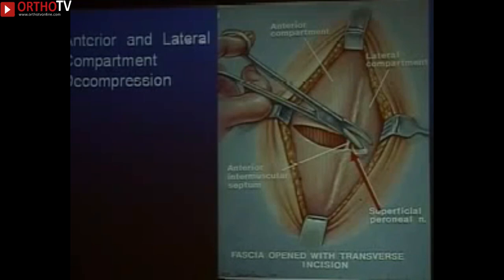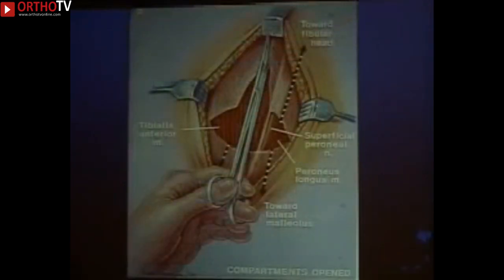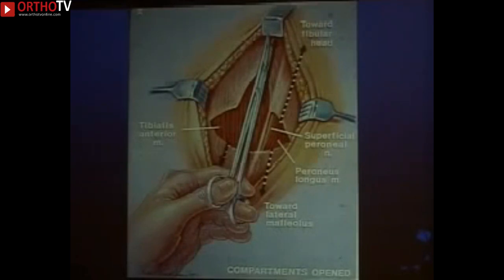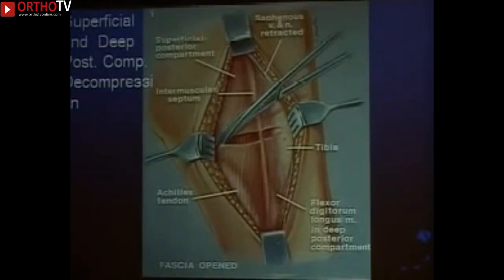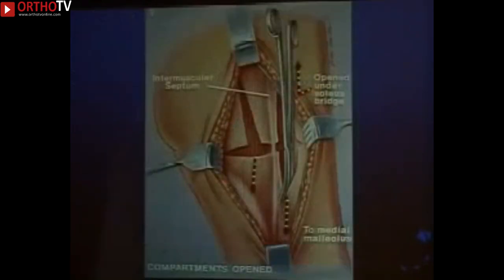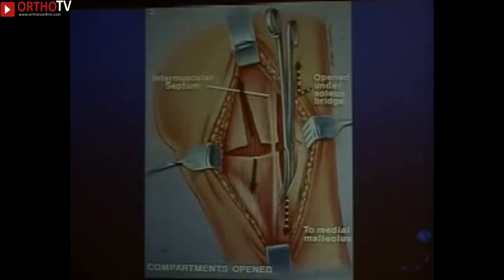Orient your scissors and make a large enough incision to ensure adequate decompression, sliding proximally toward the patella and distally toward the great toe for the anterior compartment, and toward the fibular head and lateral malleolus for the lateral. The superficial and deep posterior compartments are approached through a posteromedial incision; the soleus bridge can hide the deep posterior compartment, so you may need to lift part of it. This is about a ten-minute operation — it's the decision to do it that's the hard part.